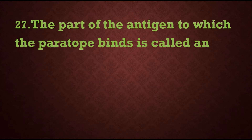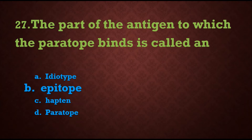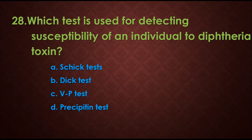Question 27: The part of the antigen to which the paratope binds is called — options are: A) idiotope, B) epitope, C) hapten, D) paratope. The answer will be B) epitope. The paratope is a part of the antibody; here they are asking about the part of the antigen to which the paratope binds, which is called the epitope.